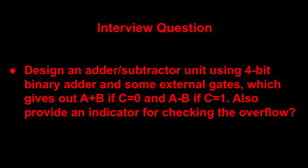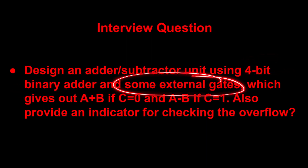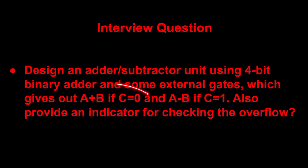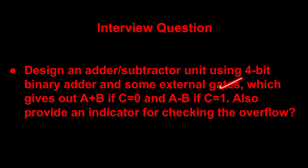In this video we need to design an adder or subtractor by making use of a 4-bit binary adder and some external gates. We need to perform addition when C is equal to 0, and subtraction (A minus B) when C is equal to 1. We also need to find out whether overflow is there or not. We will start from the overflow concept and then design the circuit.